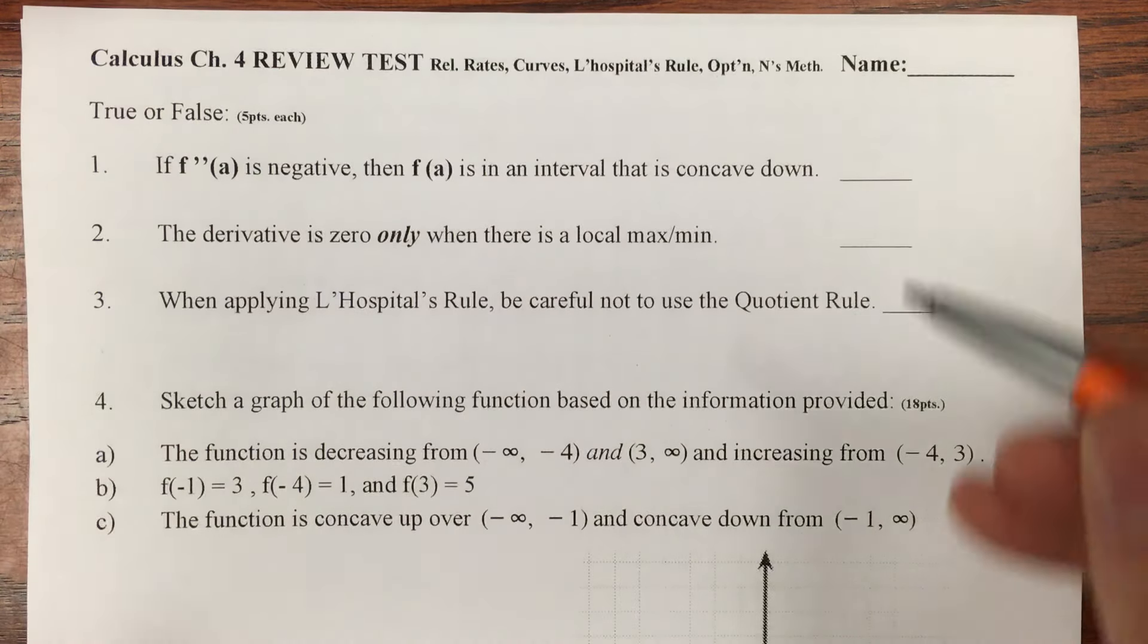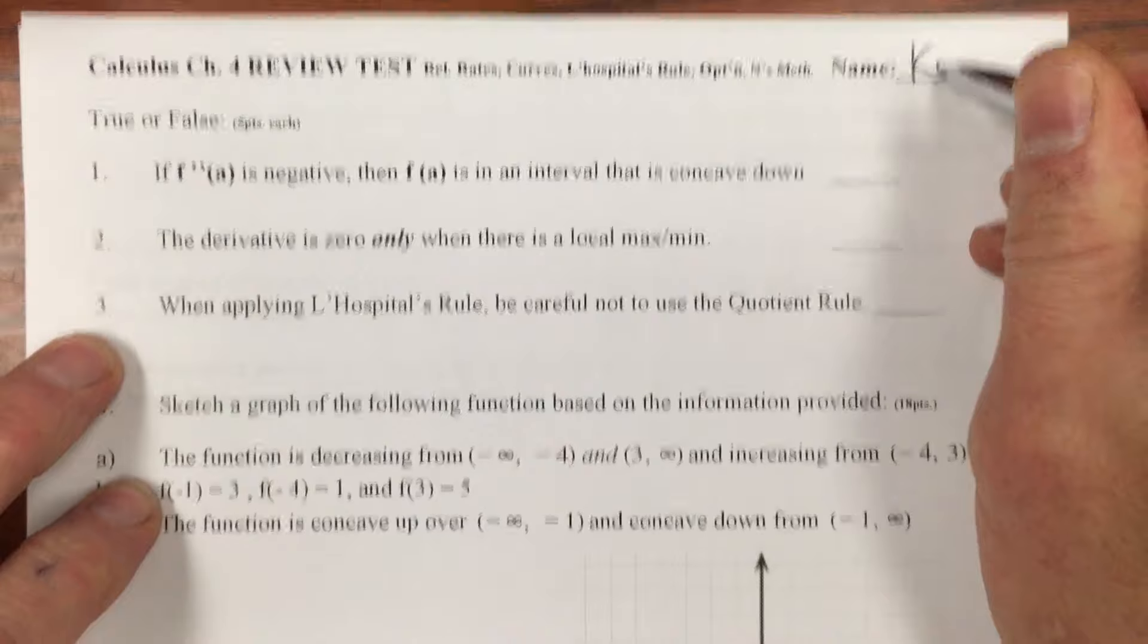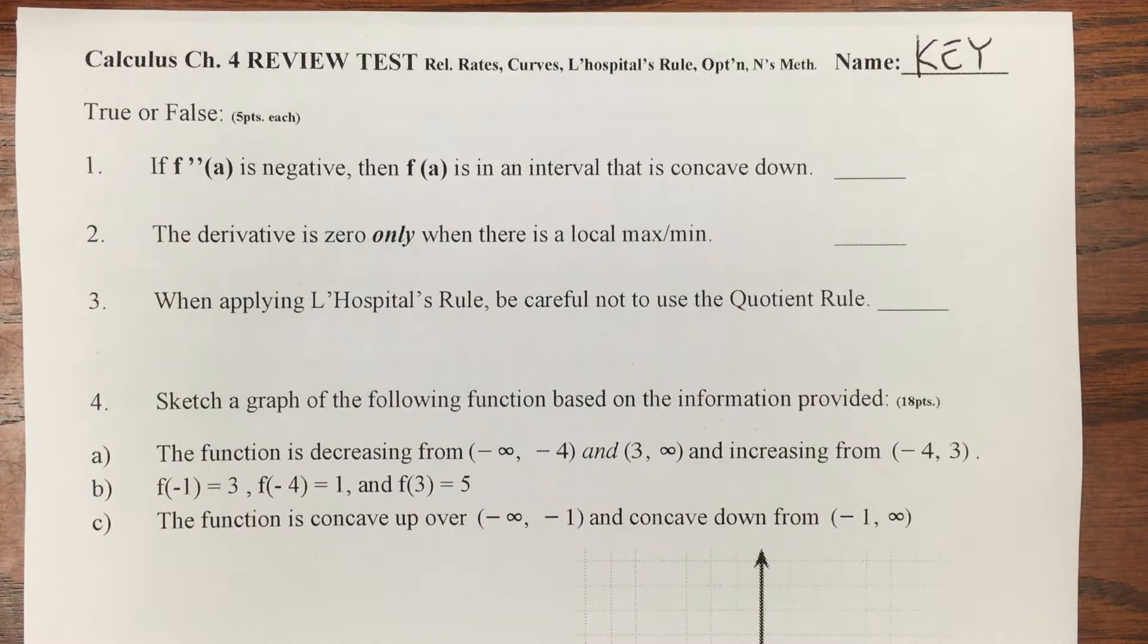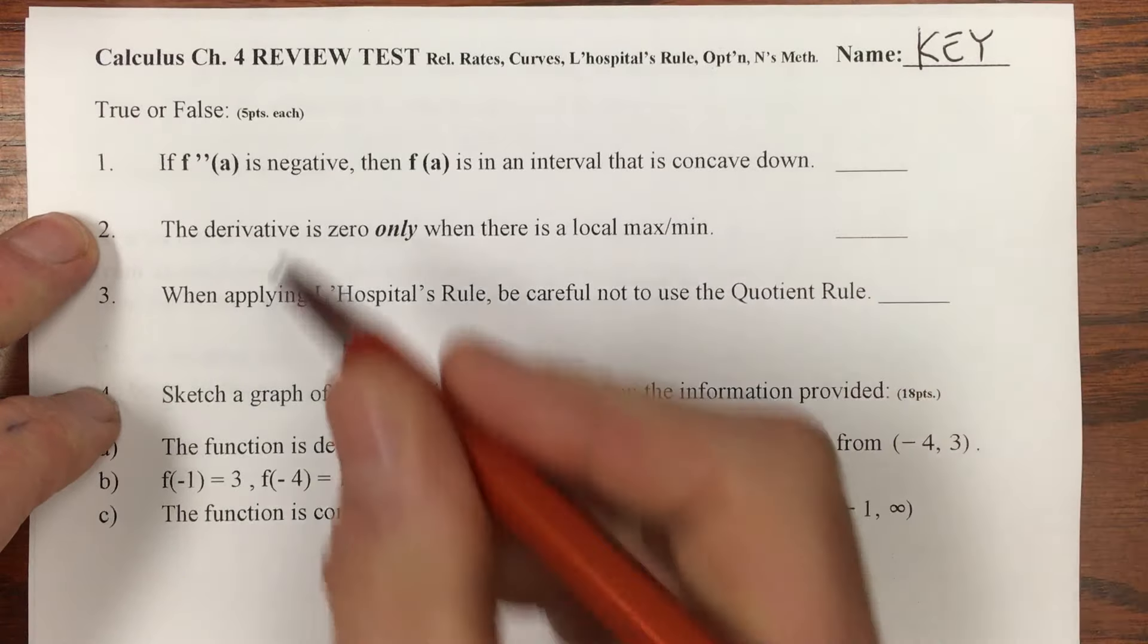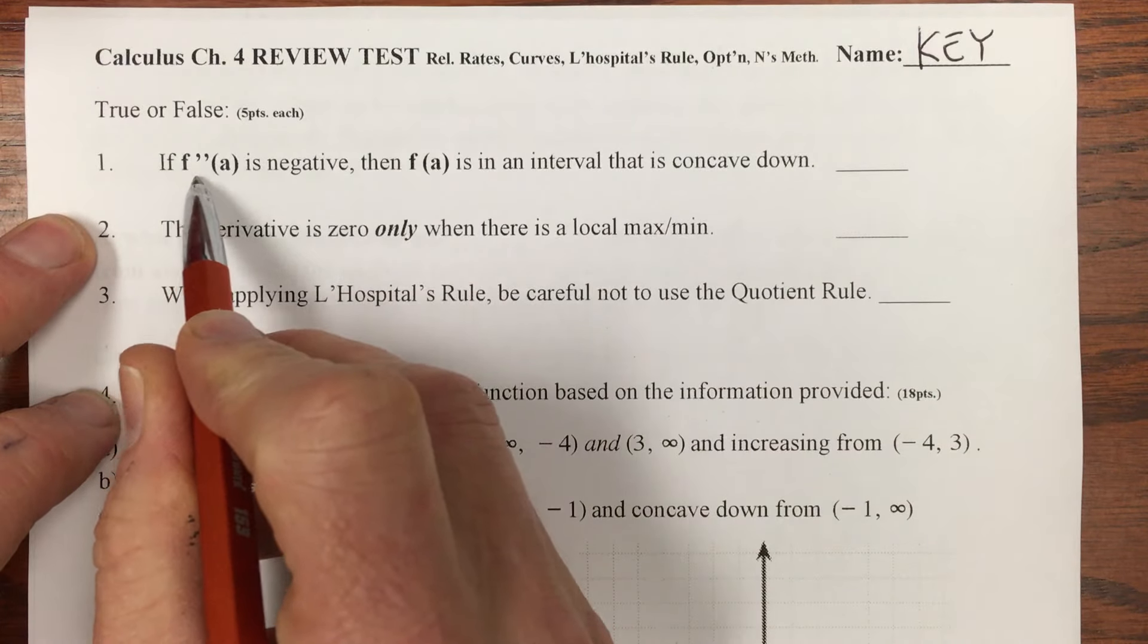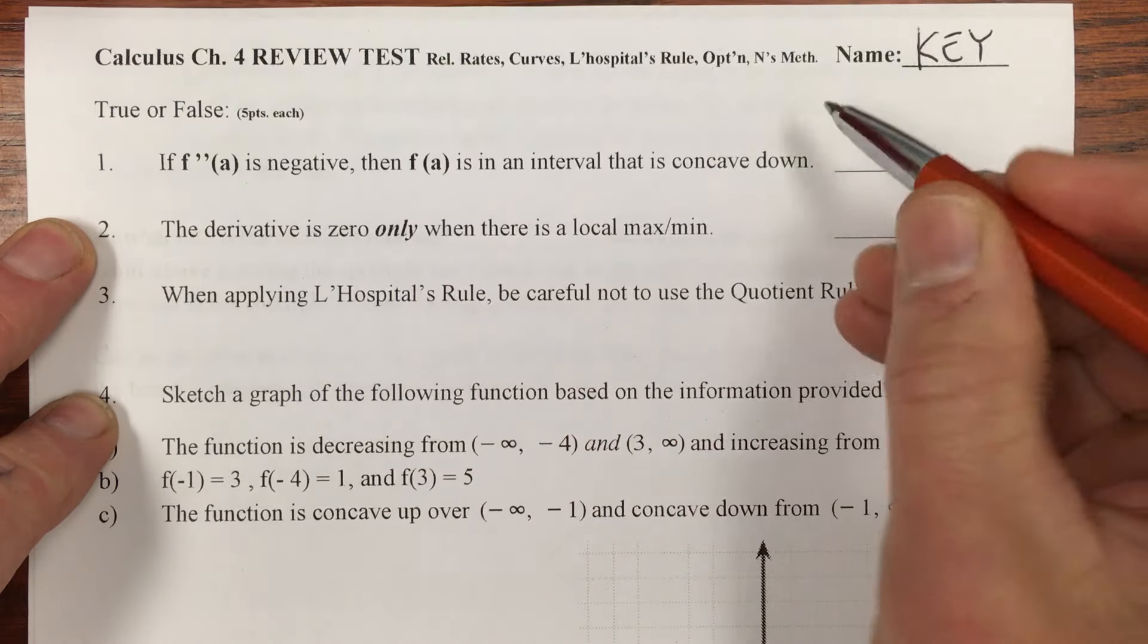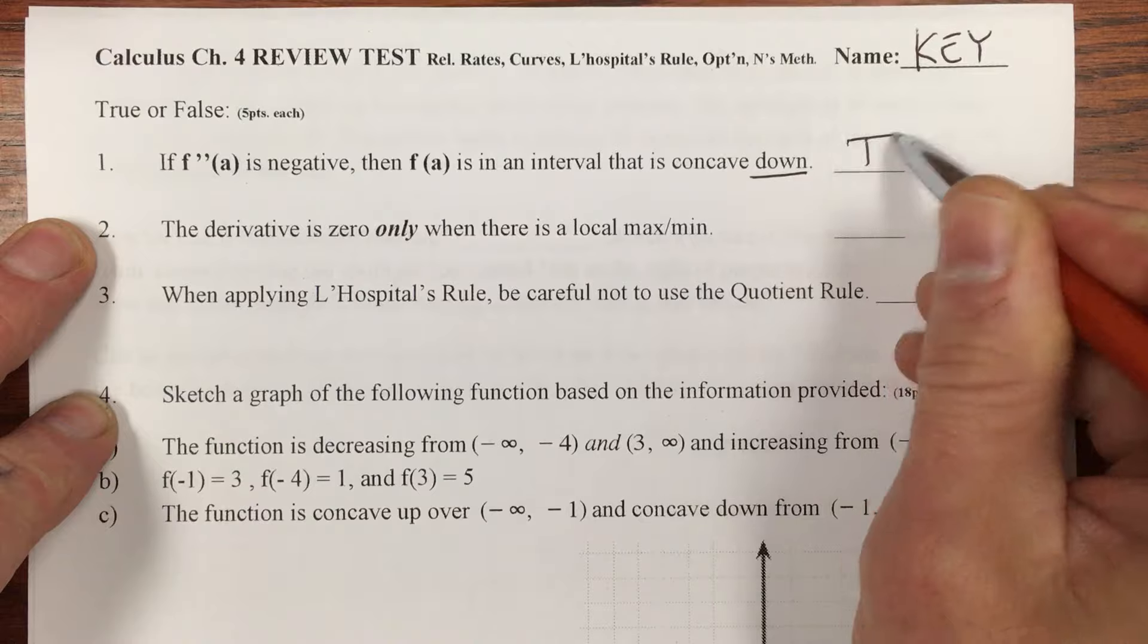Okay, here we are trying to get through the answer key as quickly as possible. True and false problems to start off, warm-ups. If the second derivative is negative, then yes, it is in an interval that is concave down, so that is true.